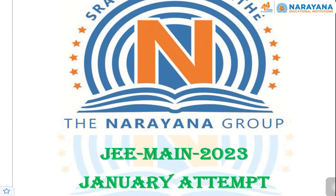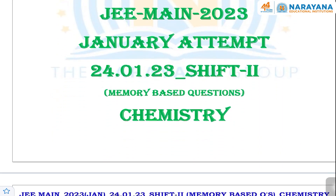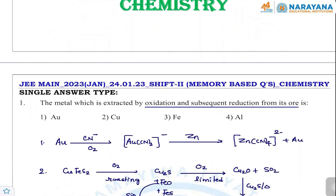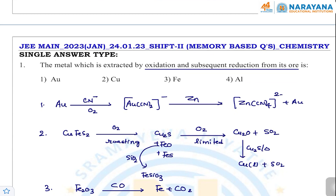This is a memory-based paper of 24th January, Shift 2. Let us see the questions of this paper. The first question is asked on metallurgy — which metal is extracted by oxidation and subsequent reduction of its ore?